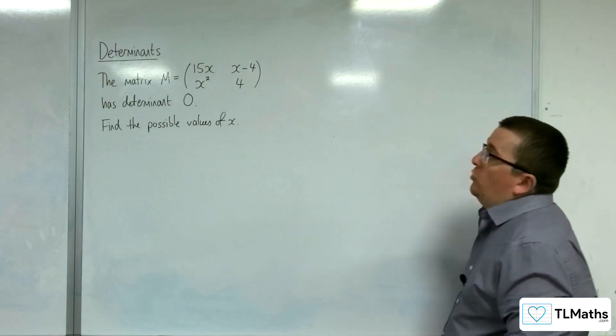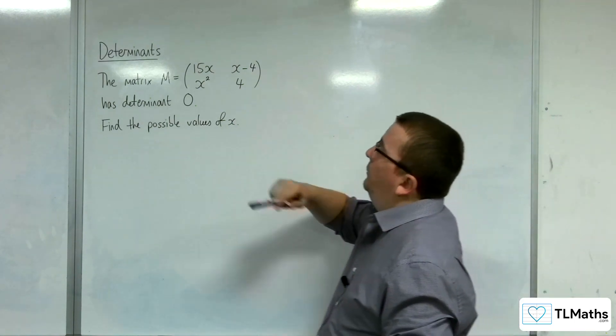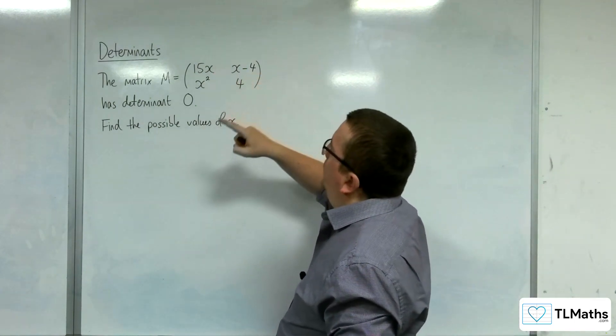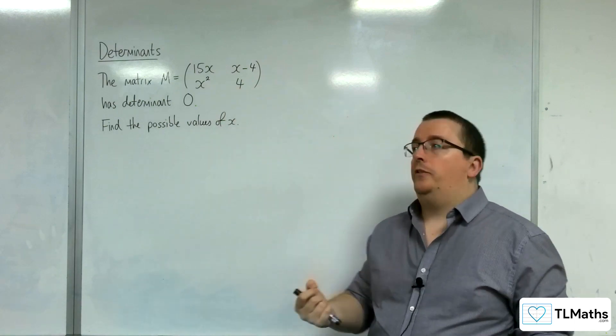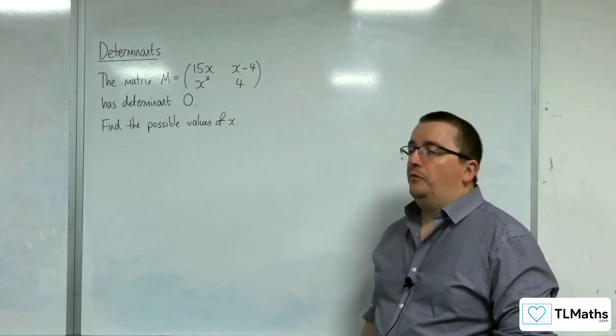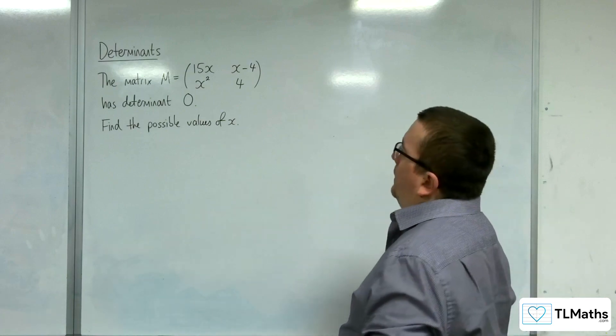In this problem, the matrix M is a 2 by 2 matrix with entries 15x, x minus 4, x squared, and 4, and we're told that it has determinant 0. Find the possible values of x.